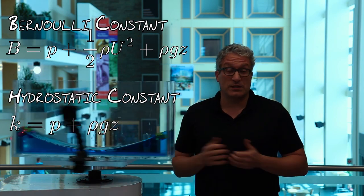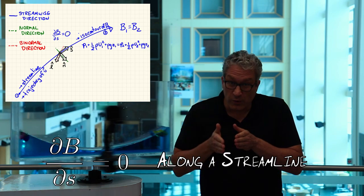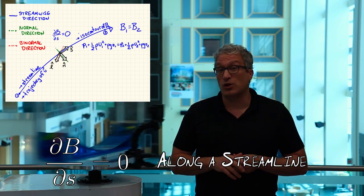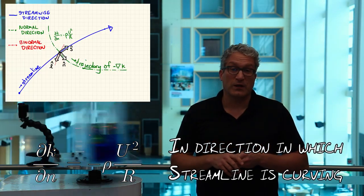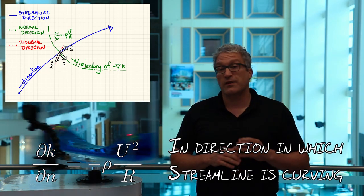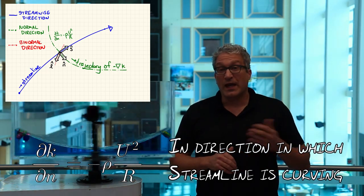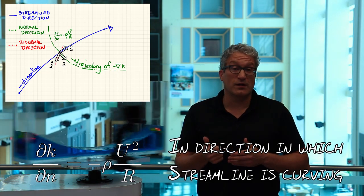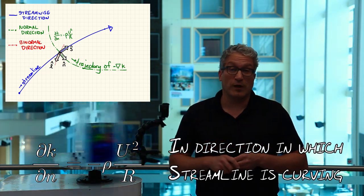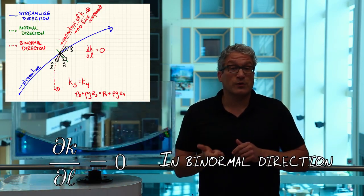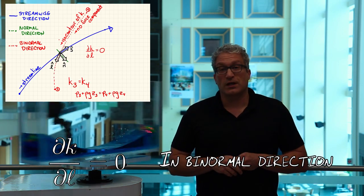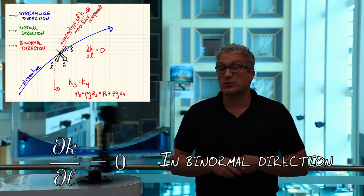With a streamline coordinate system comes enormous simplifications. Specifically, we get information about the Bernoulli constant and the hydrostatic constant in different directions. Following a streamline in the streamwise direction, the Bernoulli constant doesn't change. In the normal direction, where the streamline is curving, there must be a gradient in the hydrostatic constant proportional to the speed squared and inversely proportional to the radius of curvature. In the binormal direction, where there is no motion or acceleration, there can be no force, so the hydrostatic constant must be uniform.